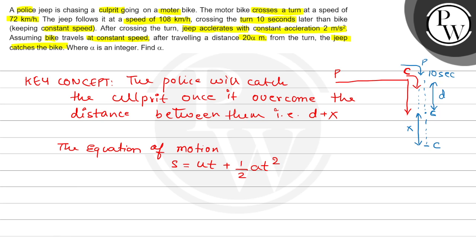What is the velocity of the culprit? When the culprit was at the turn and the police turned 10 seconds later, the culprit covered a distance which we need to calculate. Let the velocity of the culprit be VC. How much is it? 72 kilometers per hour. We will convert this to meter per second by multiplying with 5 divided by 18. This will be 20 meter per second. This is the culprit's speed.